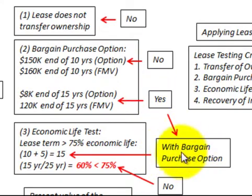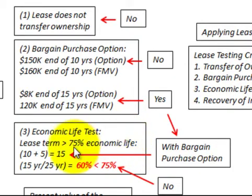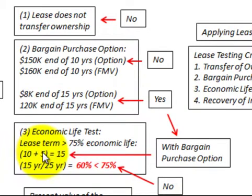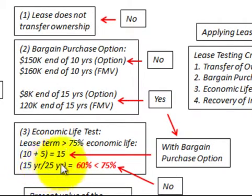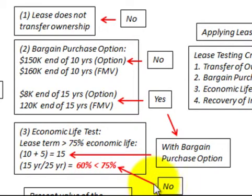With the bargain purchase option identified, we can determine the economic life test, where the lease term must be greater than 75% of the economic life of the asset. The lease term includes the 10 years of the lease plus 5 additional years because it's likely they'll exercise the bargain purchase option, giving us 15 years total. Dividing 15 years by the economic life of 25 years gives us 60%, which is less than the required 75% hurdle rate. So it fails the economic life test.